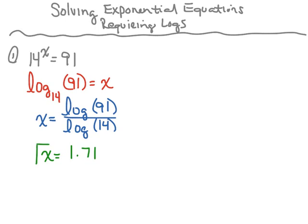I'm rounding to two decimal places, so this is not exact — this is just an estimate. So x is approximately 1.71.